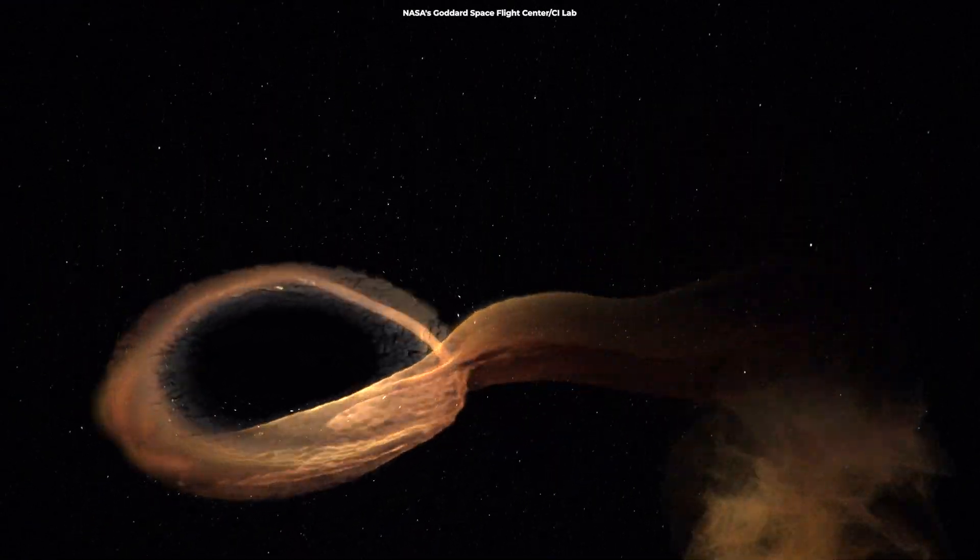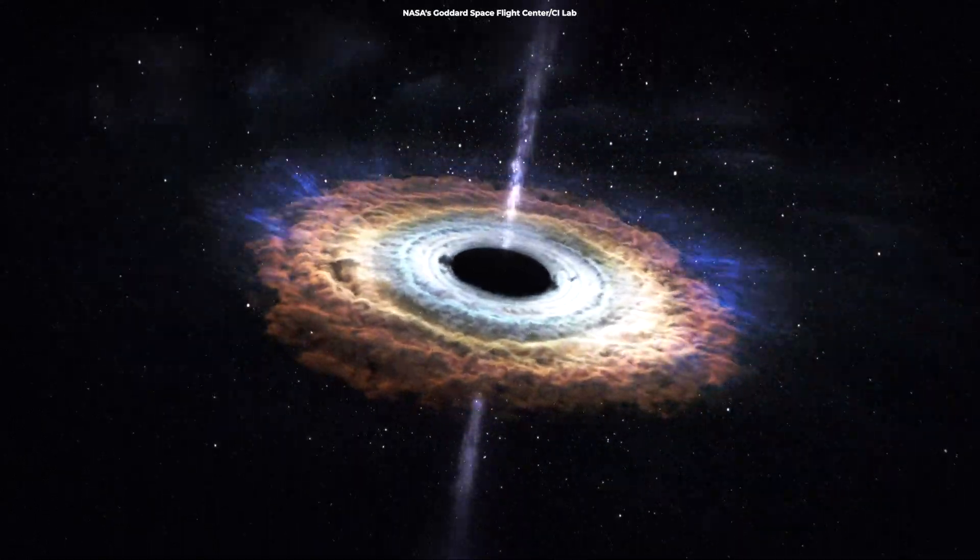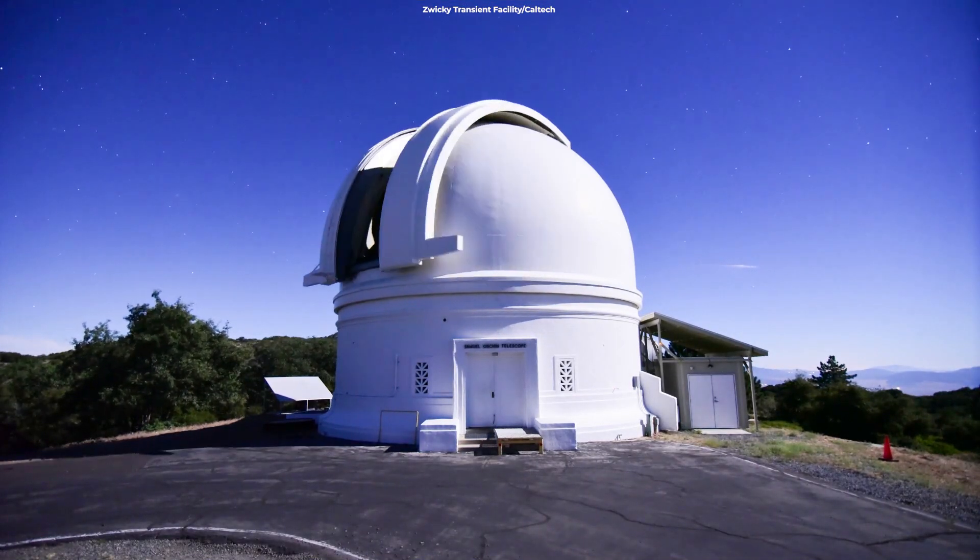Astronomers calculate the jet is so bright that the black hole is eating about half the sun's worth of mass each year. The volume suggests Zwicky spotted the event early on.